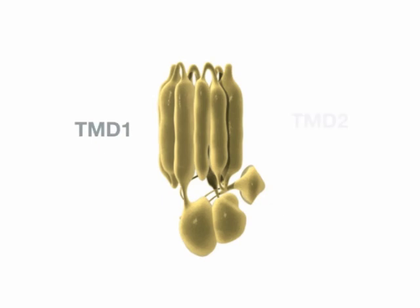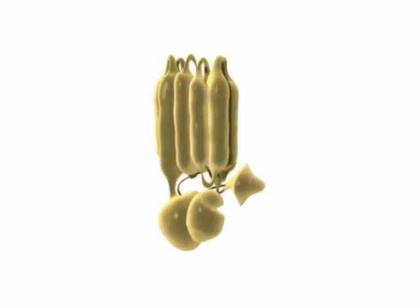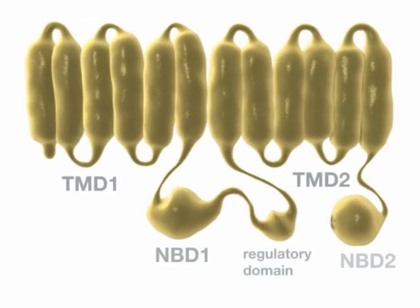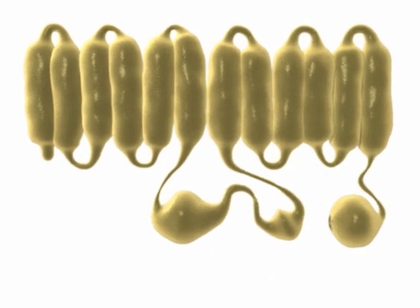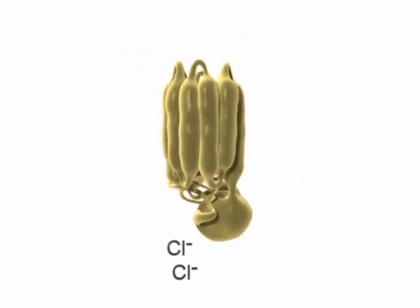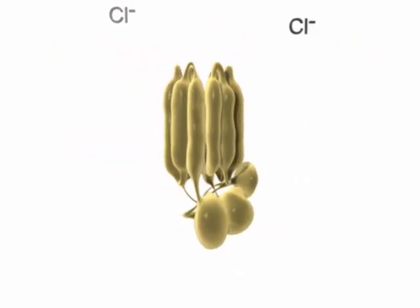CFTR also has two transmembrane domains, TMD1 and TMD2. The movement or conductance of chloride across the CFTR protein requires phosphorylation of the regulatory domain. In addition, binding and hydrolysis of ATP are required for the opening and closing of the CFTR channel, a process also known as gating of CFTR.